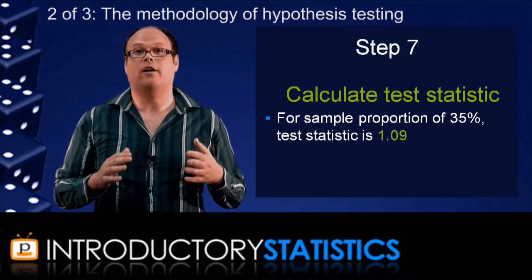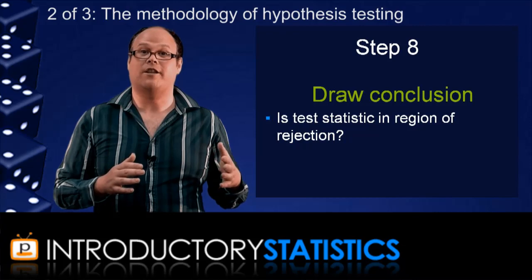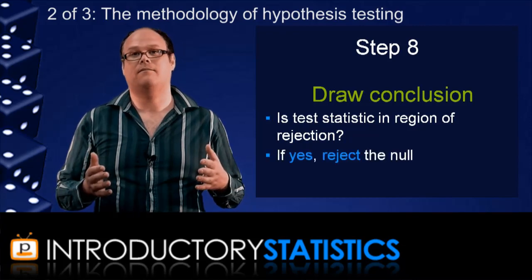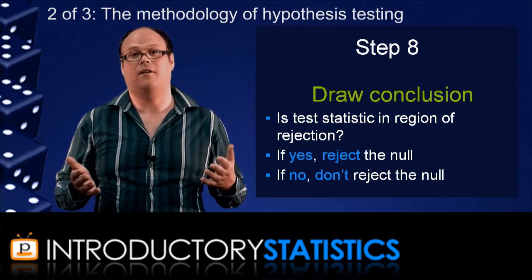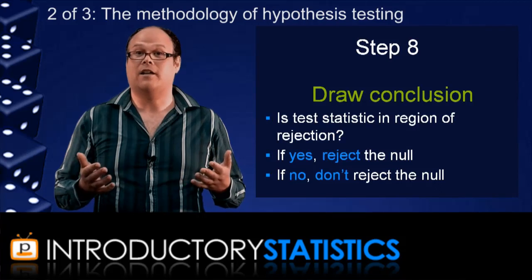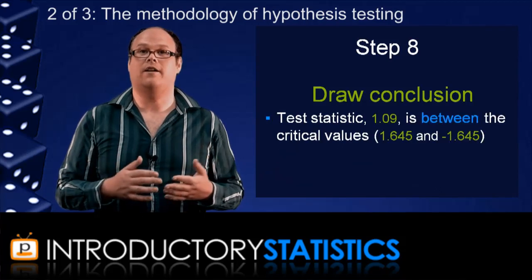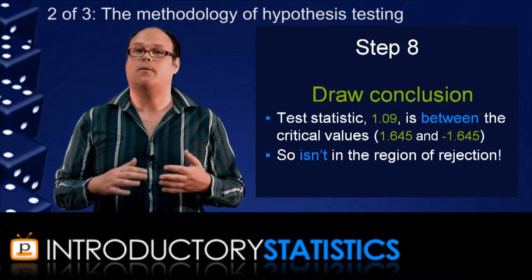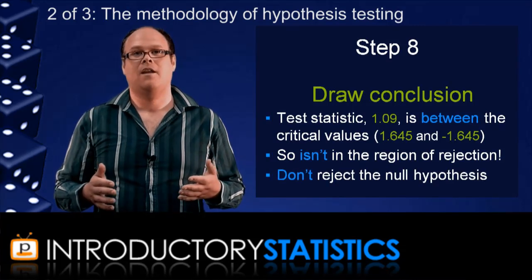Finally, you draw a conclusion. If the test statistic is in the region of rejection, you reject the null hypothesis. Otherwise, you do not reject the null hypothesis. In the basketball study, the test statistic was 1.09. And that's between the two critical values, so we don't reject the null hypothesis.